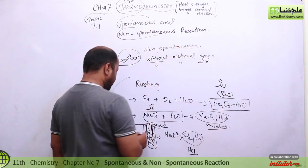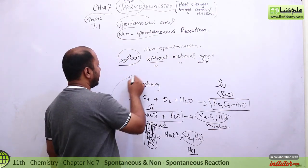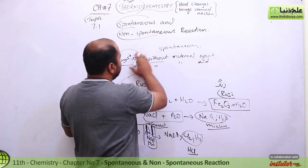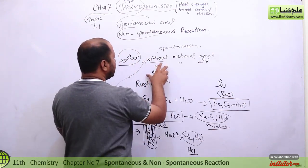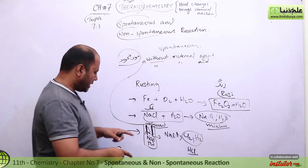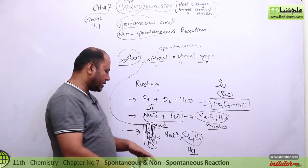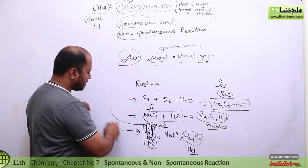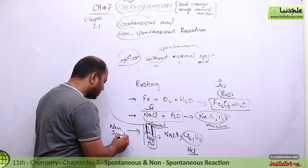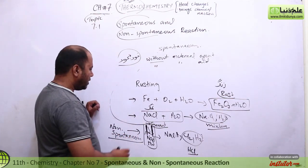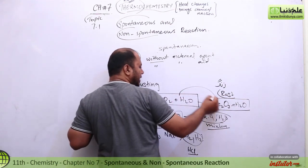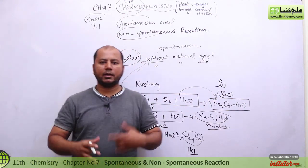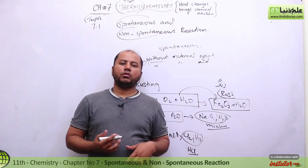Sorry, let me clarify: rusting — iron aur oxygen aur water ka aapas mein zang lagana, oxides ban jana iron ki — that is spontaneous, yeh khud ba khud ho raha hai. NaCl electrolysis — yeh non-spontaneous hai, khud ba khud nahi ho raha tha.